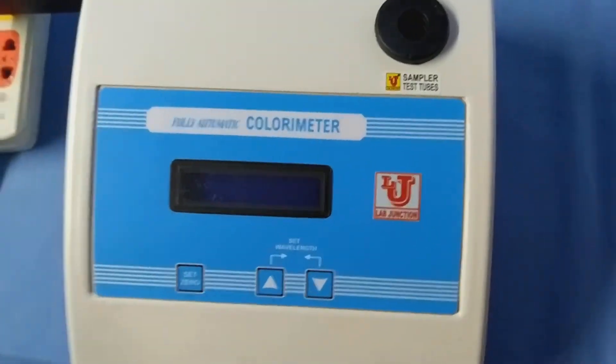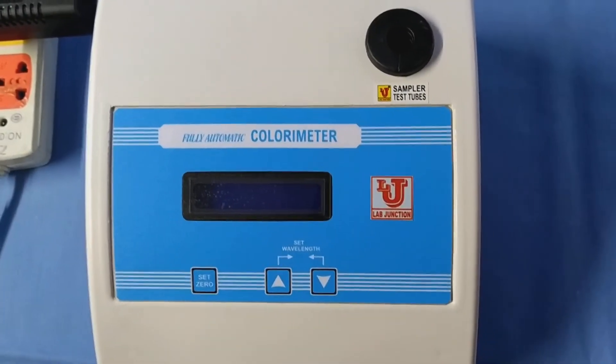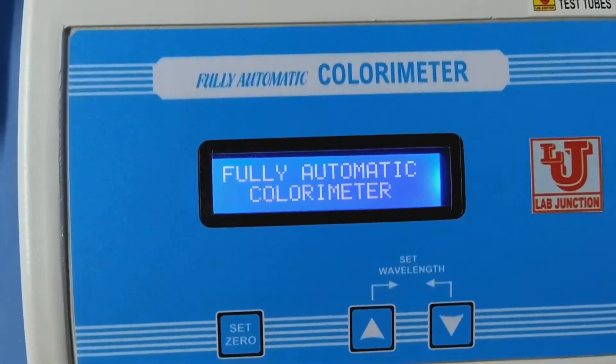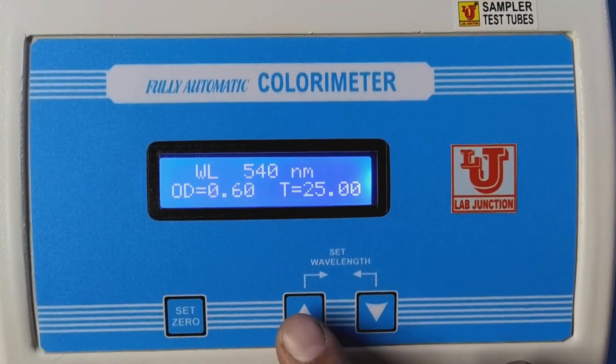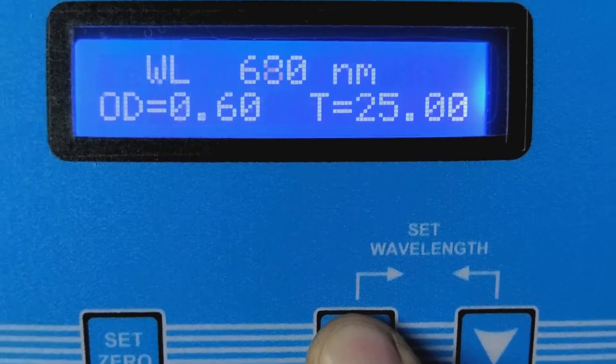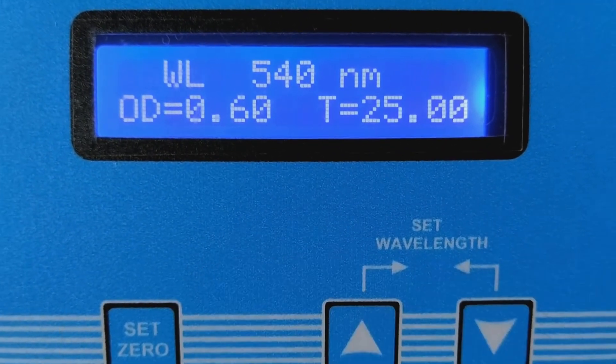Now, I am doing glucose test from this colorimeter. You have to switch on the machine colorimeter. First, you have to set your wavelength. I am setting it to 540 nm.